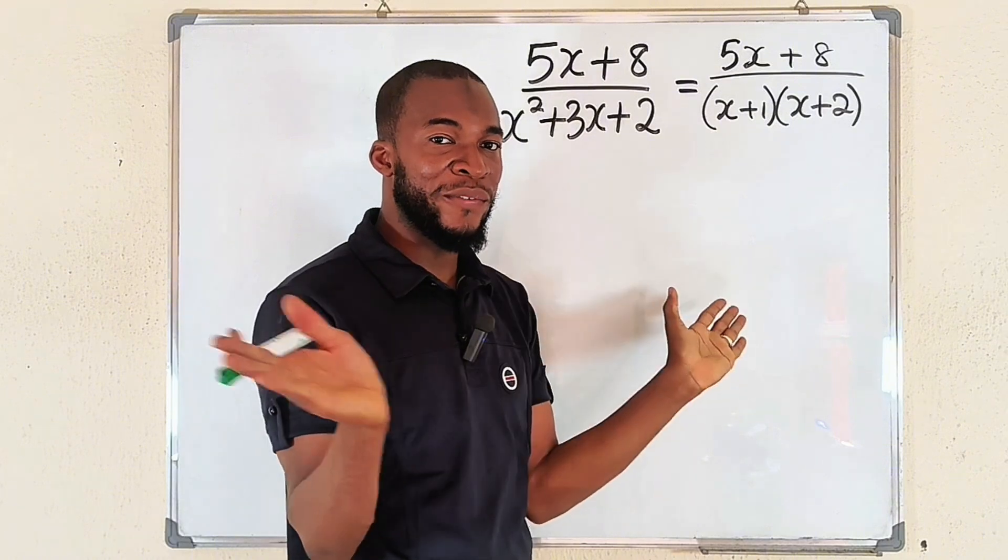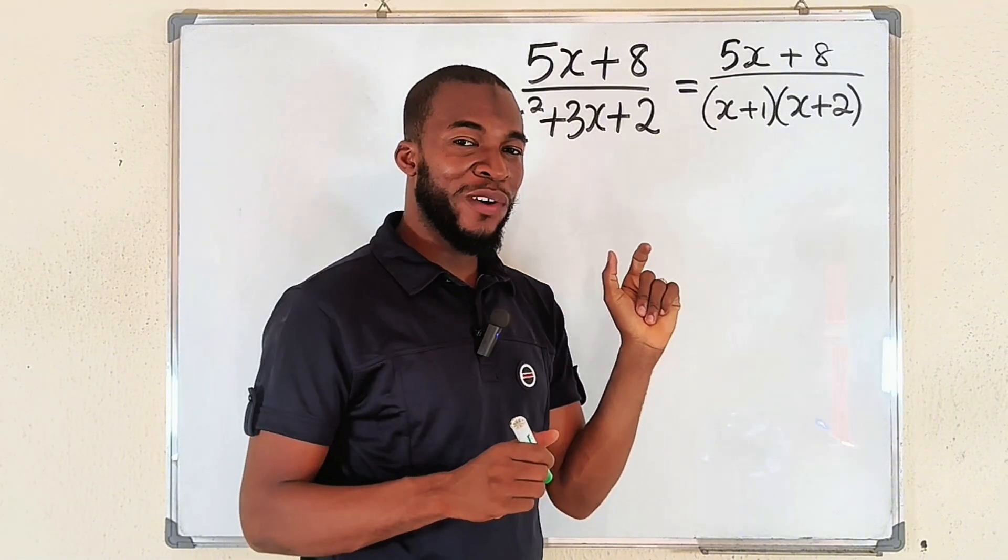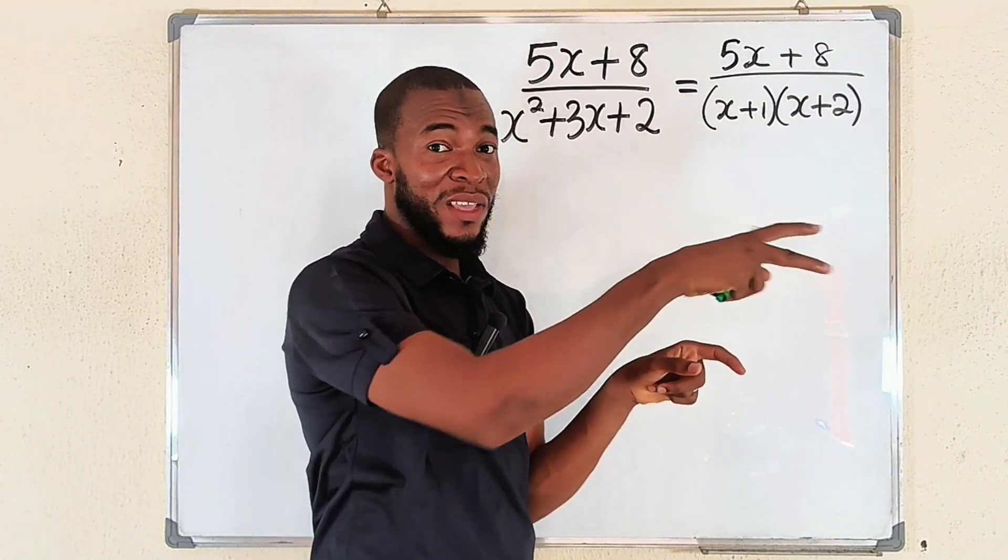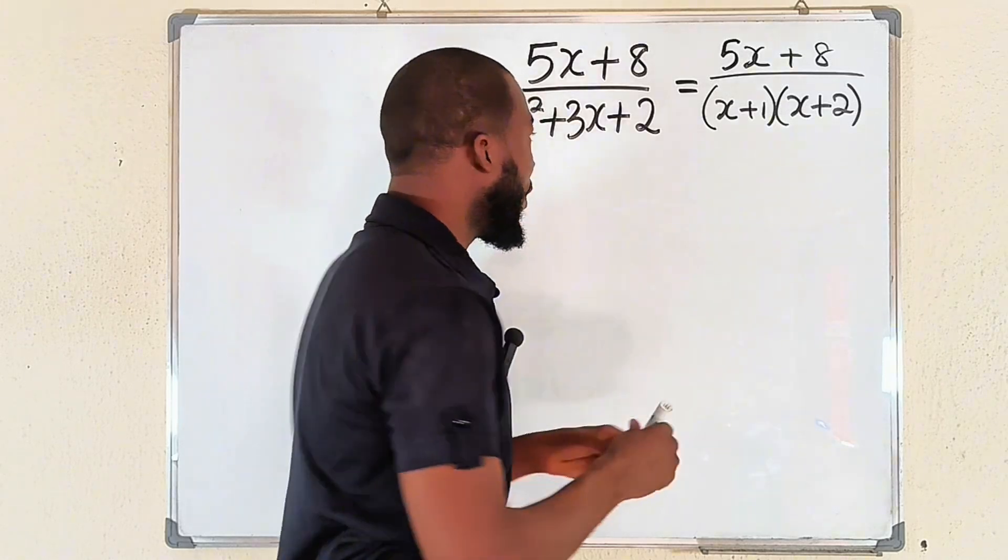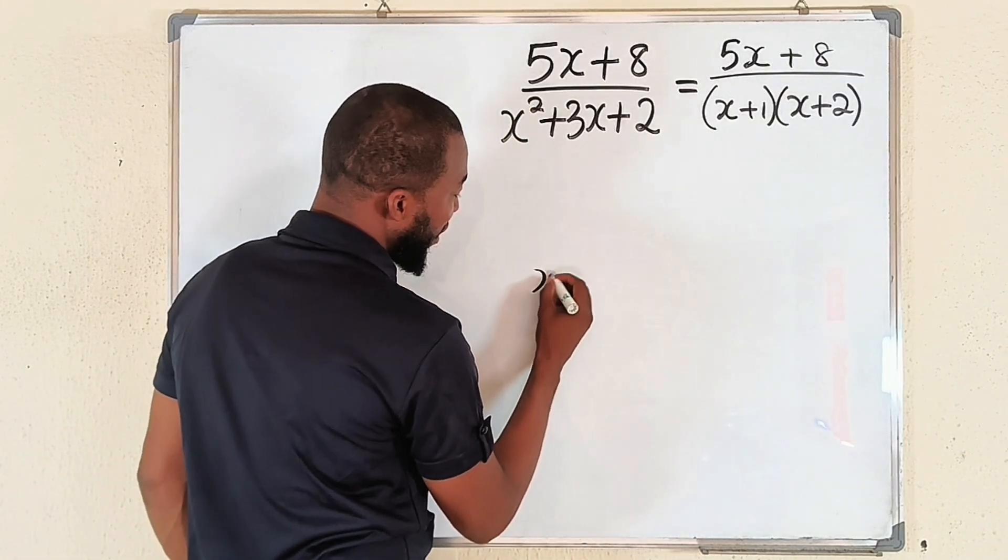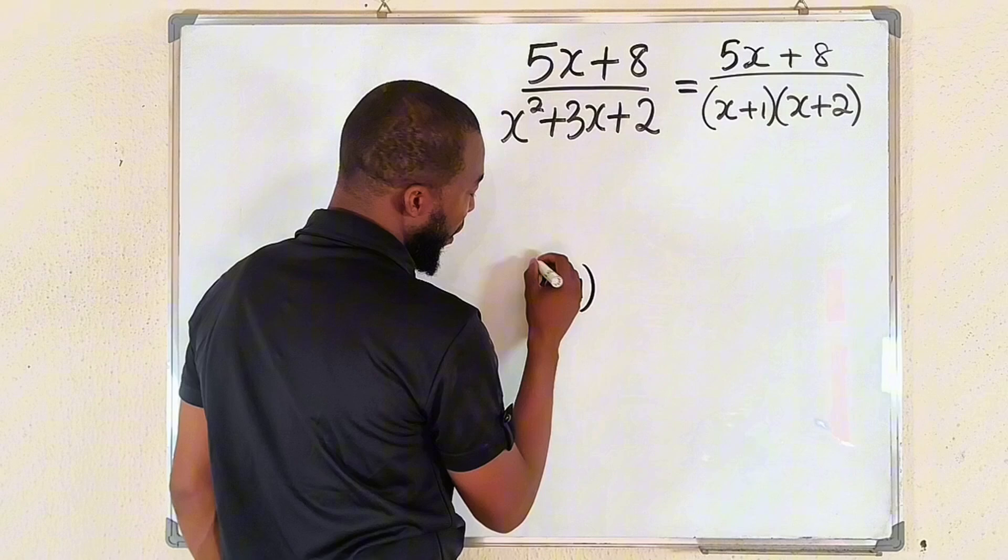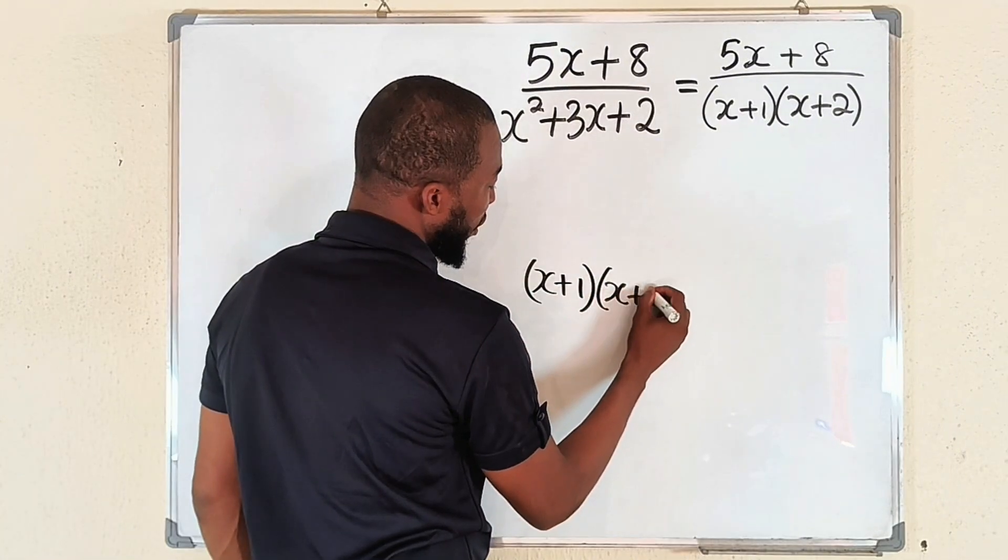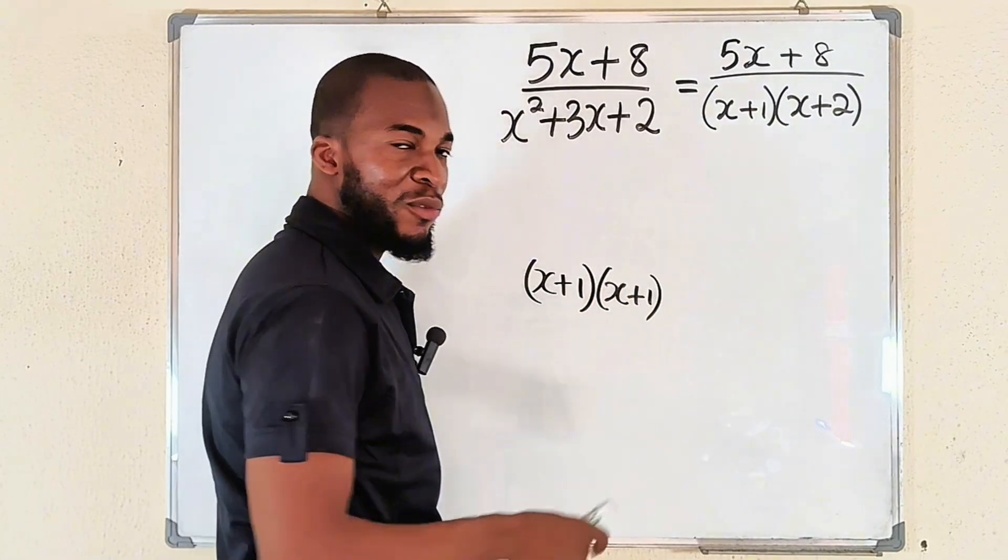Do not use cover-up method when the two factors are the same, meaning we have repeated factors, something like (x+1) multiplied by (x+1). You can see they are exactly the same. Do not use cover-up method here.